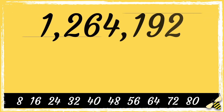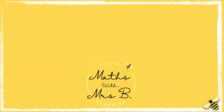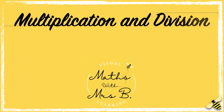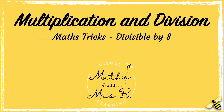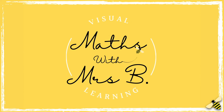Now it's your turn: 1,264,192. Is this number divisible by eight? Let me know your answer in the comment section. So remember, the method is to see if the last three digits are divisible by eight.